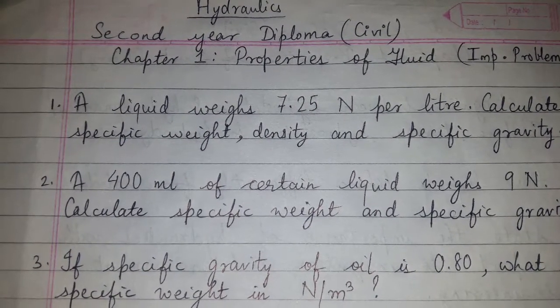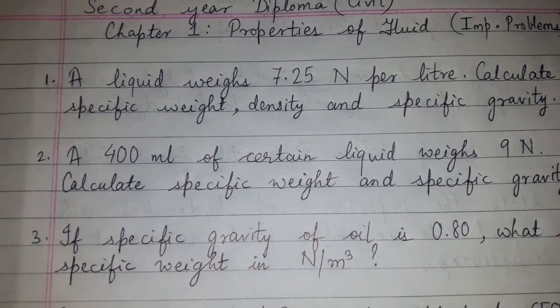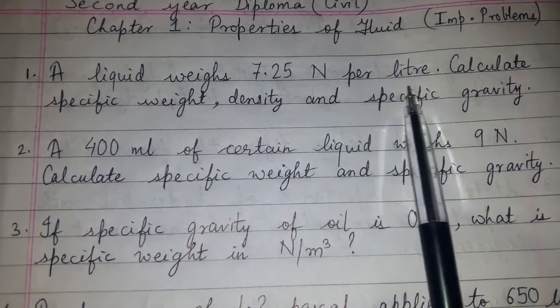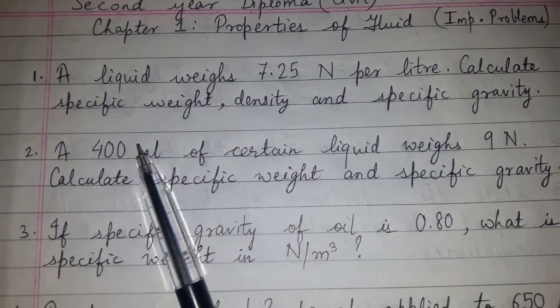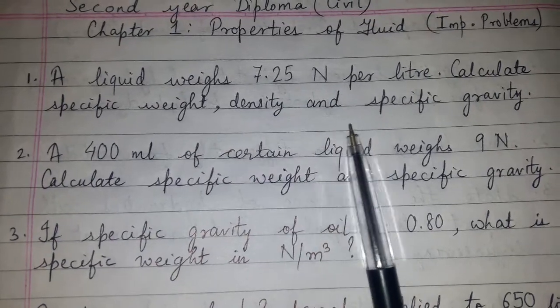A liquid weighs 7.25 N per litre. Calculate specific weight, density and specific gravity.